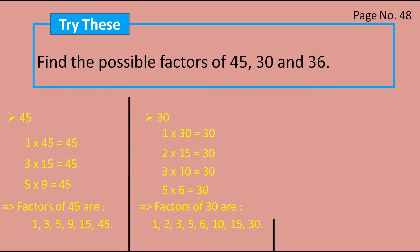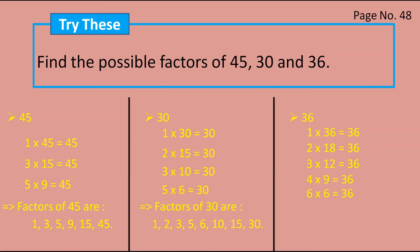Next is 36. So 1 × 36 = 36, 2 × 18 = 36, 3 × 12 = 36, 4 × 9 = 36, and 6 × 6 = 36. We can't find any other table. So the factors of 36 are 1, 2, 3, 4, 6, 9, 12, 18, and 36.